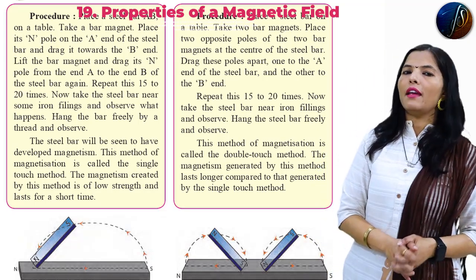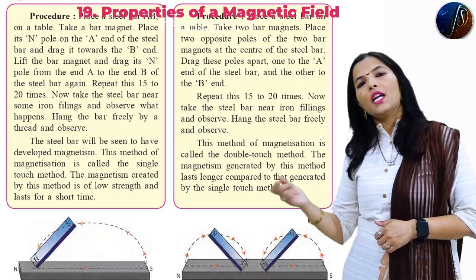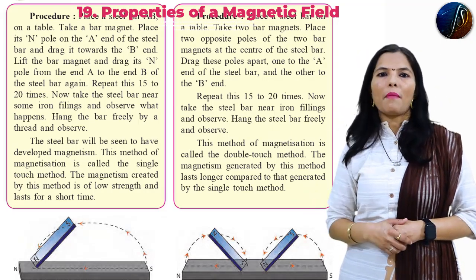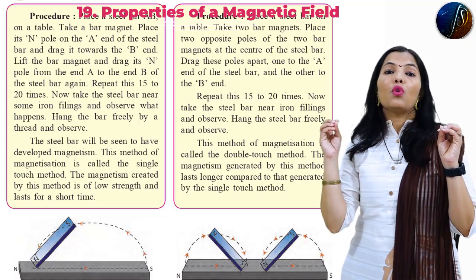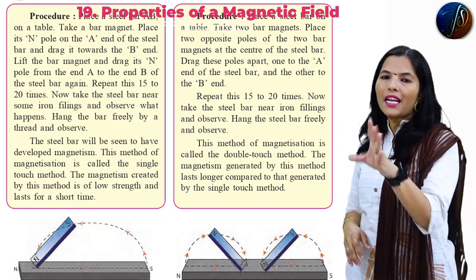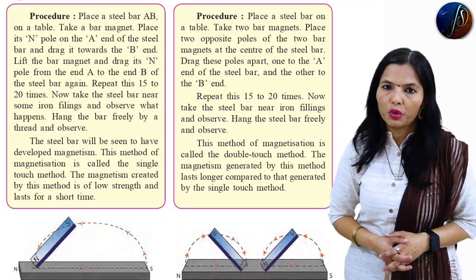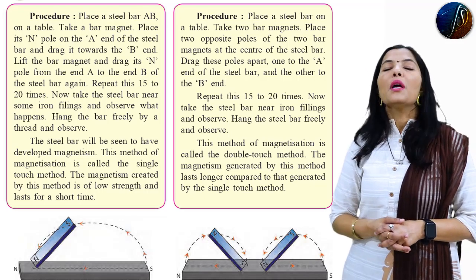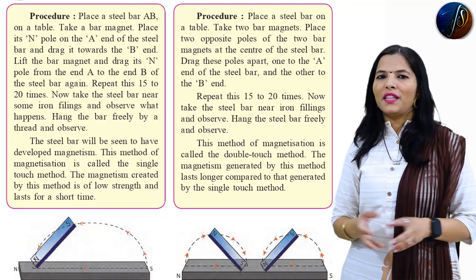So students, in single touch method, one bar magnet is used; in double touch method, two bar magnets are used to produce magnetism in a non-magnetic substance like a metal. This property is called magnetism. We have studied magnetism by single touch and double touch methods.